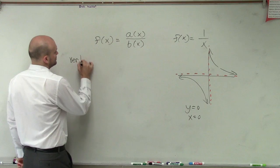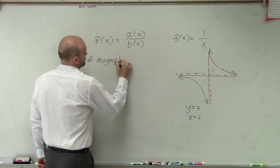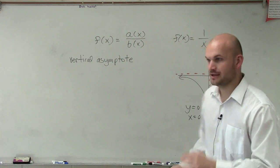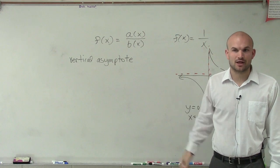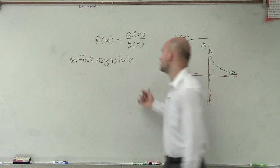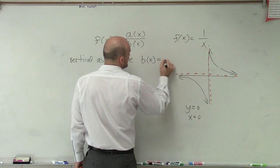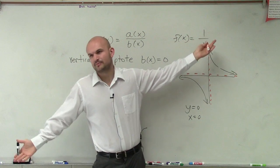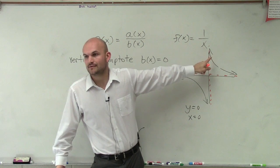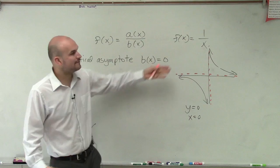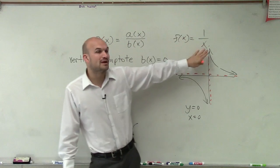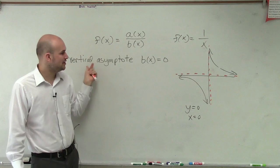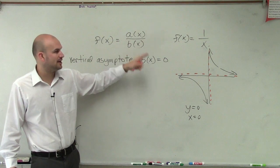The first one we're going to deal with is the vertical asymptote. The vertical asymptote of a rational function — that means when you have one polynomial divided by another polynomial — is going to be when b of x is equal to 0. That's very similar to the reciprocal function. We know that x cannot equal 0, so whenever you have your denominator equal to 0, that's your vertical asymptote. You want to write down: vertical asymptote is when your denominator polynomial equals 0.